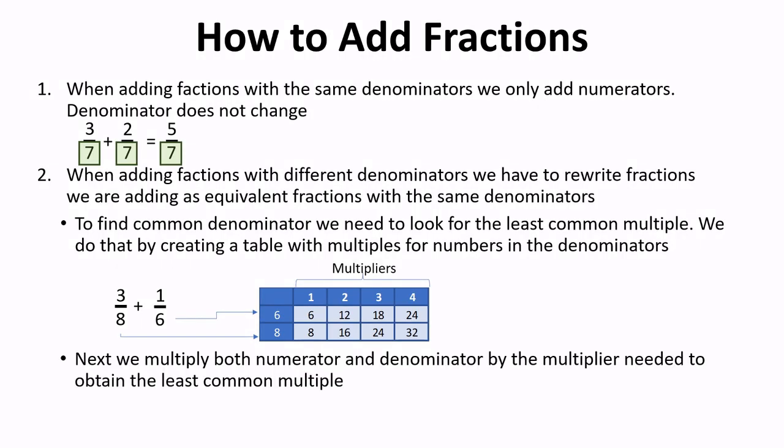Next, we multiply both numerator and denominator by the multiplier needed to obtain the least common multiple. So, we have to multiply numerator and denominator of a first fraction by 3, and we have to multiply numerator and denominator of a second fraction by 4.